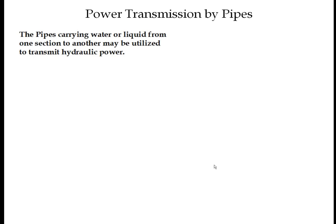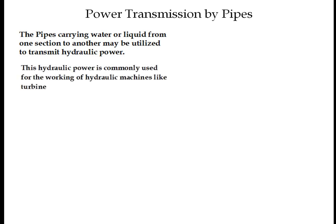The pipes carrying water or liquid from one section to another may be utilized to transmit hydraulic power. In practical situations, the pipe carrying water is utilized to transmit hydraulic power from one section to another. This hydraulic power is used for the working of hydraulic machines like turbines. By using this hydraulic power, the turbine gets rotated and by using the generator, this mechanical energy gets converted into electrical energy.